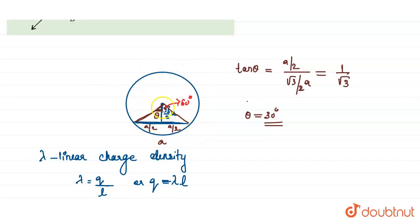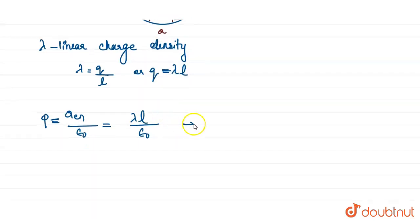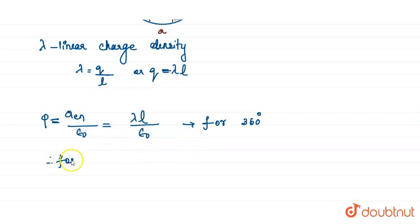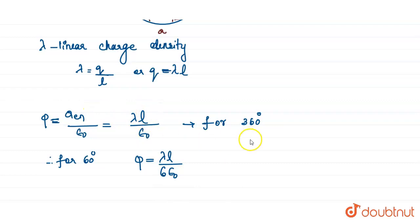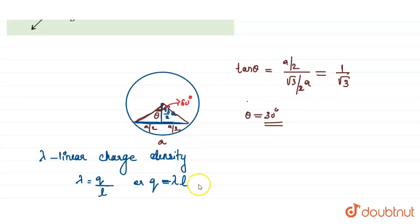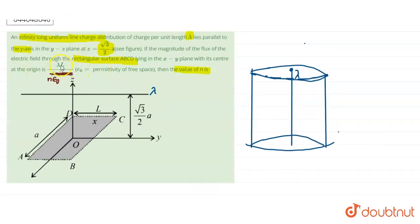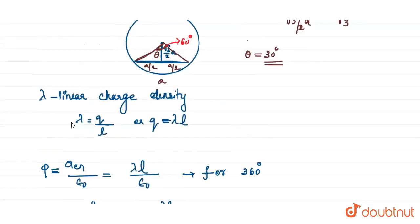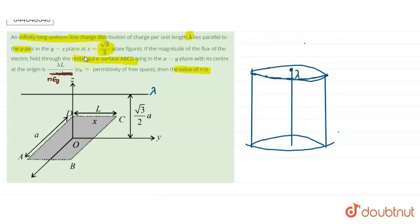This flux is for the complete surface of the cylinder, corresponding to 360 degrees. We need the flux for 60 degrees. The ratio of 360 to 60 is 6, so the flux equals lambda L divided by 6 epsilon 0. Comparing with the given expression lambda L divided by n epsilon 0, we find that n equals 6.